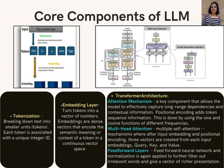The core components of an LLM include: Tokenization — breaking down text into smaller units called tokens, each associated with a unique integer ID. The Embedding layer turns tokens into vectors of numbers. Embeddings are dense vectors that encode the semantic meaning or context of a token in a continuous vector space. The Transformer Architecture's Attention Mechanism is a key component that allows the model to effectively capture long-range dependencies and contextual information.